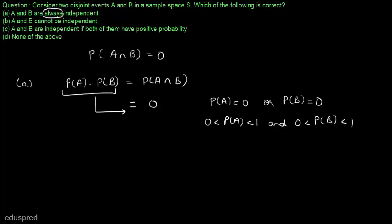Before looking at part B, let's have a look at part C. In part C, it is mentioned that A and B are independent if both of them have positive probability. This is false because if both of them have positive probability, then the probability of A multiplied by probability of B will not be equal to 0. So part C is false, and part A is also false.